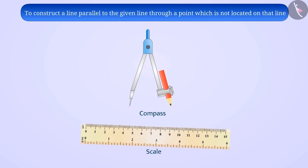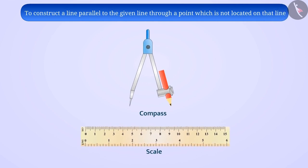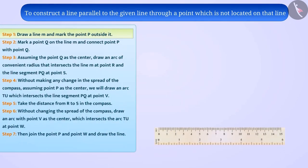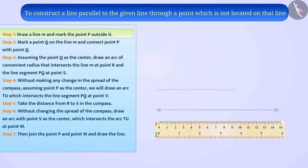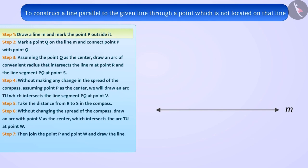Let us understand this construction using ruler and compass only. Step 1: With the help of a ruler, draw a straight line M. Mark a point P outside M. Step 2: Take any point Q on M and join Q to P.